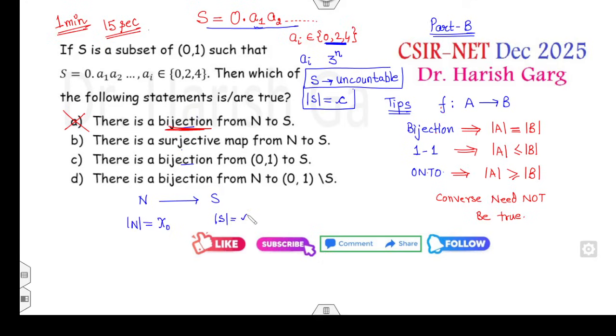Moreover, N is countable and S is uncountable, so there is no bijective map between them. Look at the second option: there is an onto map from N to S. Cardinality of N is aleph naught, cardinality of S is c. For onto, cardinality of A must be greater than cardinality of B. But aleph naught is always less than c, so there is no surjective map.